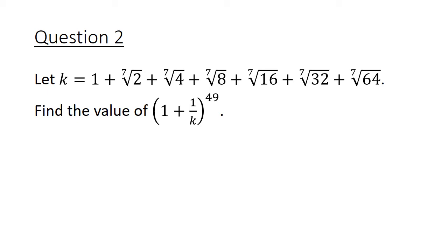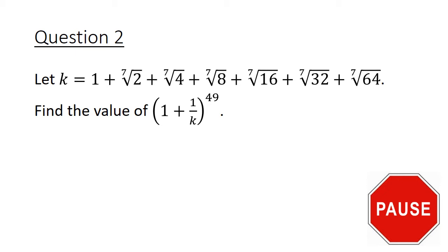Let k equal 1 plus the 7th root of 2 plus the 7th root of 4 plus the 7th root of 8, all the way to the 7th root of 64. Find the value of 1 plus 1 over k to the power of 49. Pause the video here, and give this question a good try.